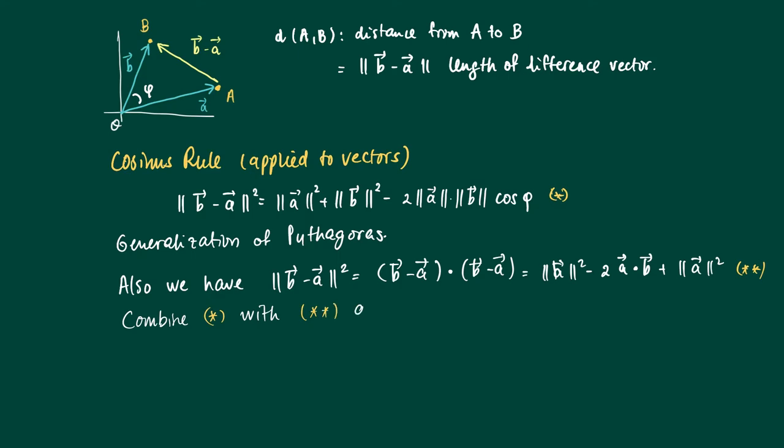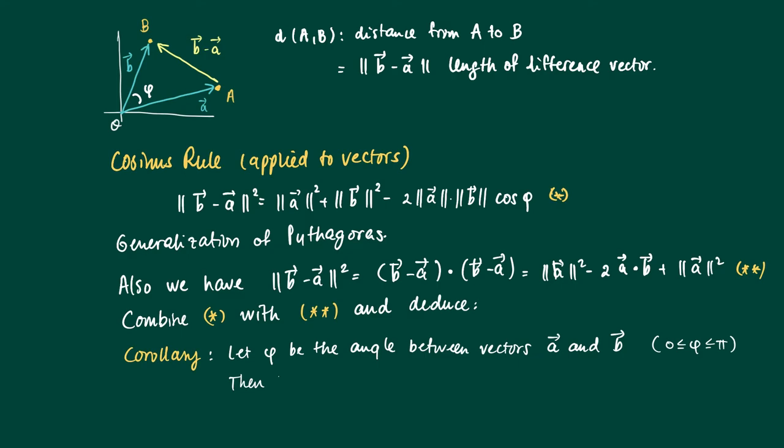Now we may deduce the following with two expressions for the length of the vector b minus a. We get as a corollary to the cosine rule, basically applied to vectors, the following: Let phi be the angle between vectors a and b, and we assume that phi is between zero and pi. Then we assume that a and b are non-zero, which means they have positive length.